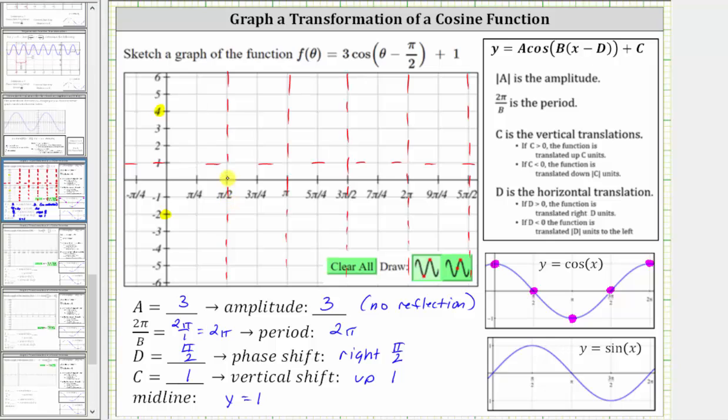Starting at x = π/2, we have a maximum of 4. Then the pattern is midline, minimum, midline, and maximum.